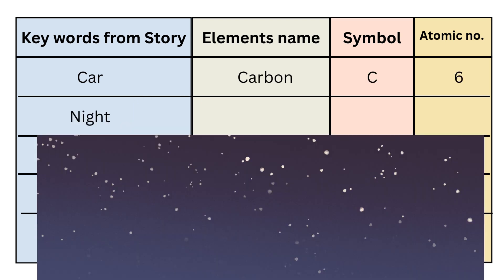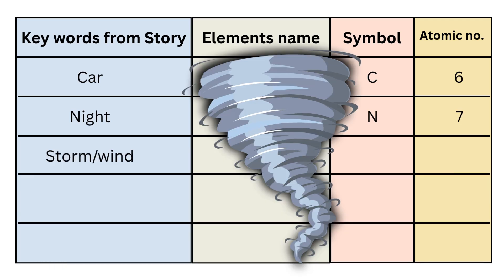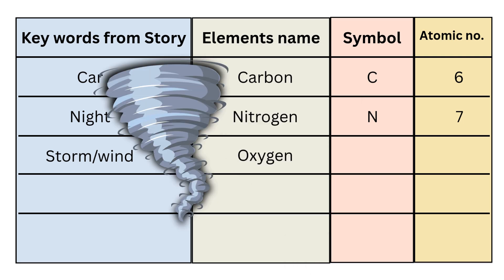They went for a night movie show — that's why your next key word is 'night', and from that you have to remember the seventh element name, that is Nitrogen. Symbol is N, and atomic number is 7. Moving forward, they faced a storm on the way. So 'storm' or 'wind' is your key word. Generally we remember oxygen when talking about wind, so your eighth element name is Oxygen. Symbol is O, and atomic number is 8.